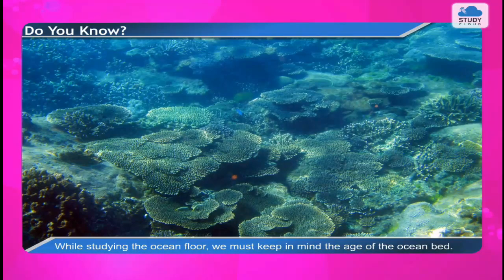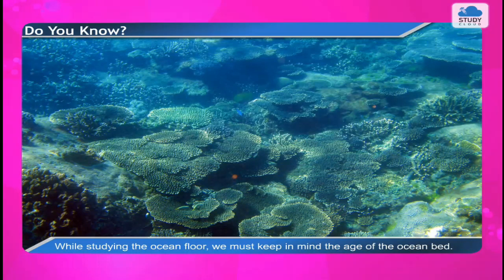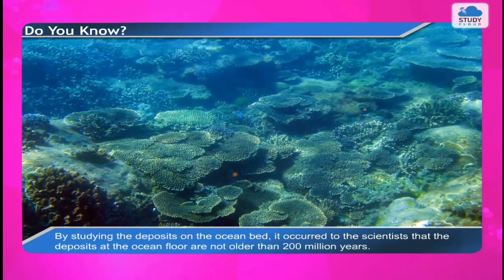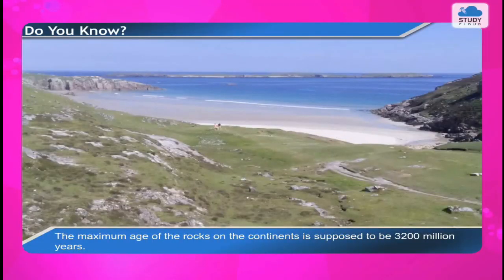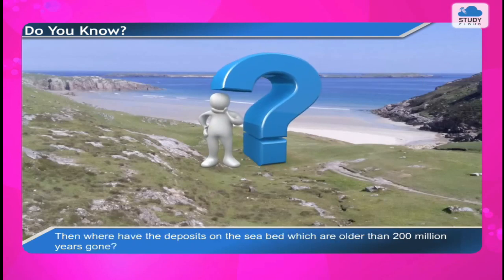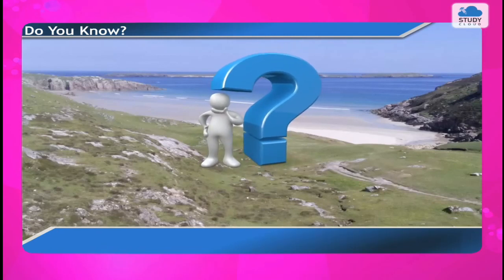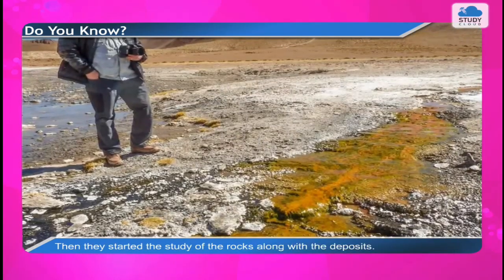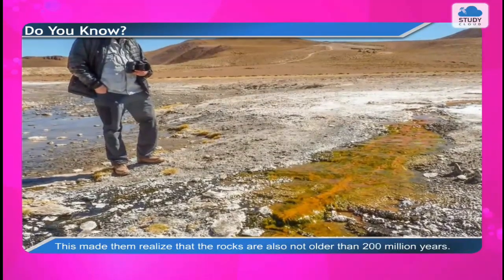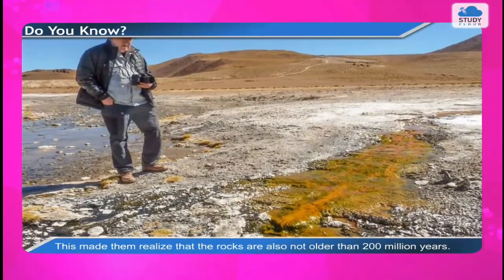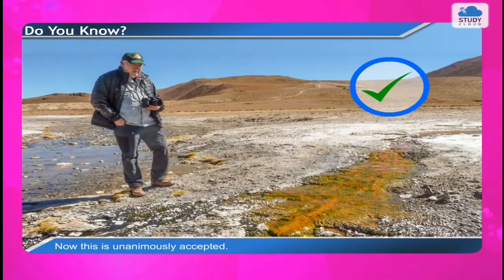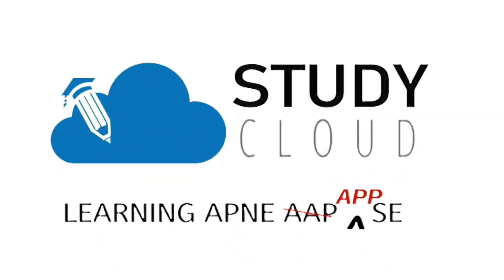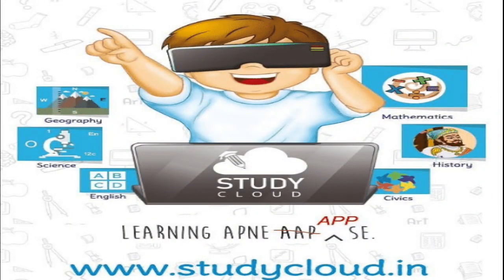While studying the ocean floor, we must consider the age of the ocean bed. By studying deposits on the ocean floor, scientists found that the deposits are not older than 200 million years, while the maximum age of rocks on the continents is around 3,200 million years. This led scientists to study the rocks, realizing they too are not older than 200 million years, confirming that the ocean floor is very young compared to the earth's surface. This research was then used in the study of the concept of plate tectonics.